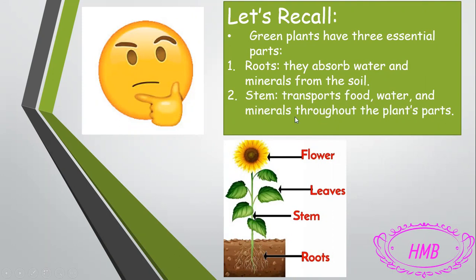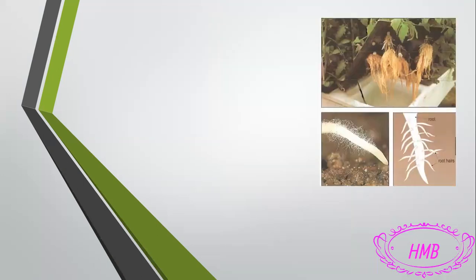The stem transports food, water, and minerals throughout the plant's parts. Then we have the leaves — these green leaves are the site of photosynthesis, the place where the plant makes its own food. Finally, we have the flower, which is the organ of reproduction that will later give us the seeds.